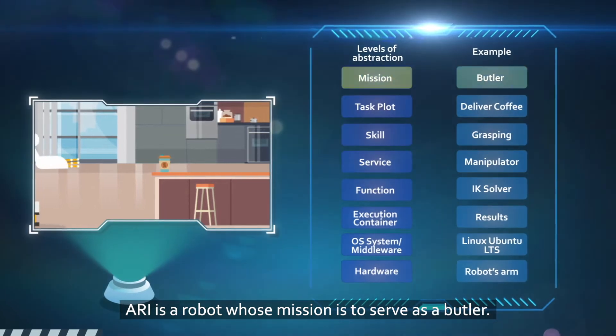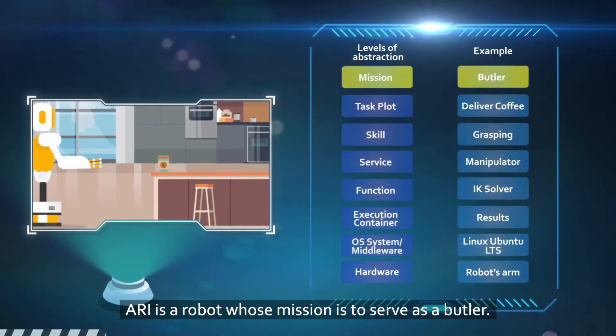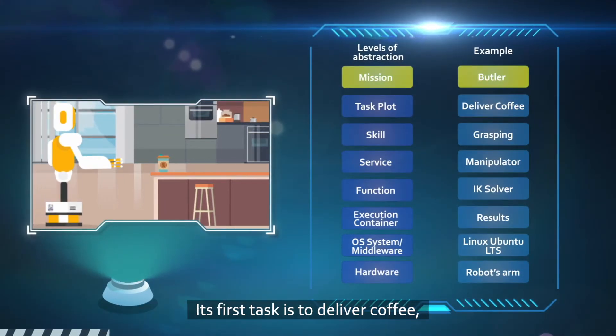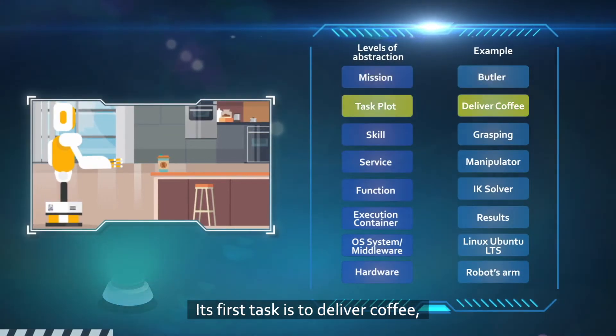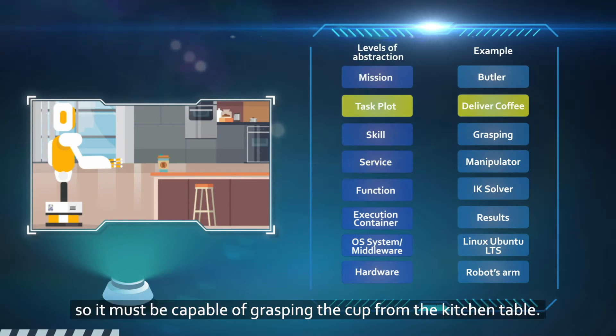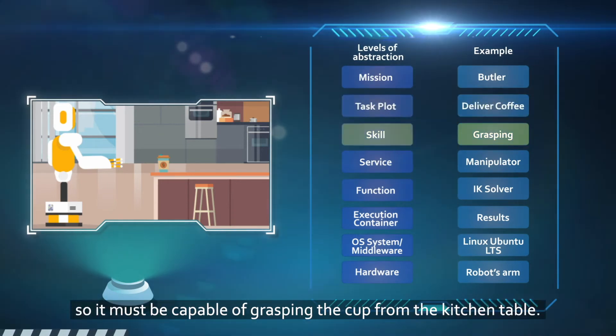Ari is a robot whose mission is to serve as a butler. Its first task is to deliver coffee, so it must be capable of grasping the cup from the kitchen table.